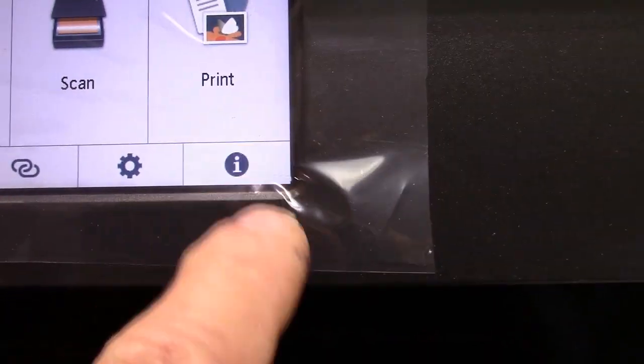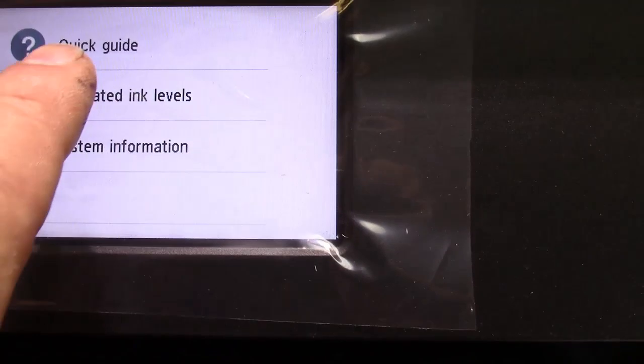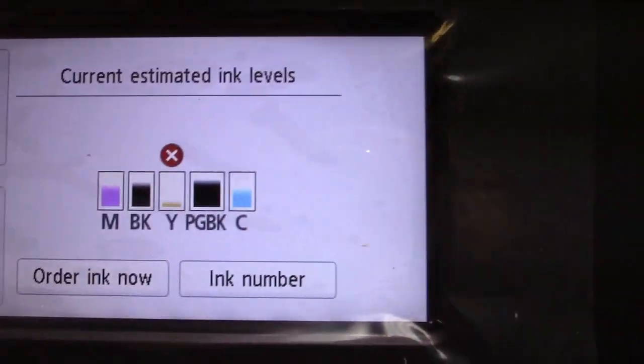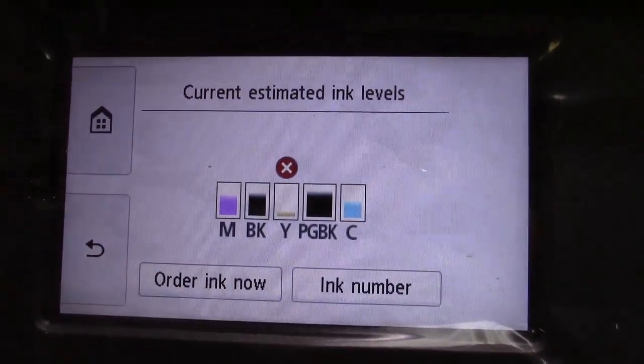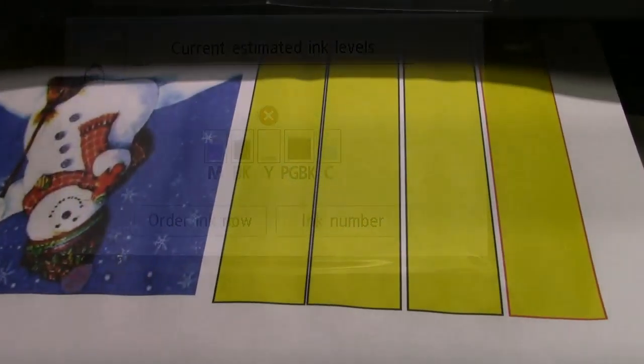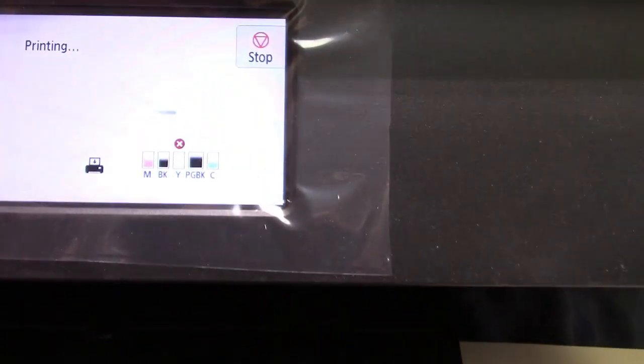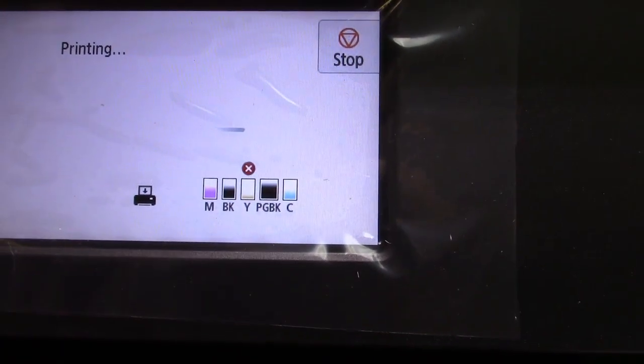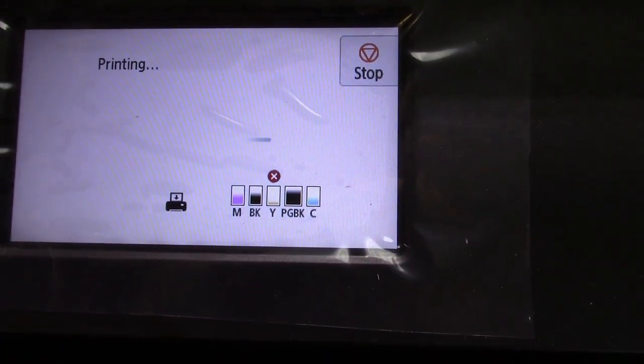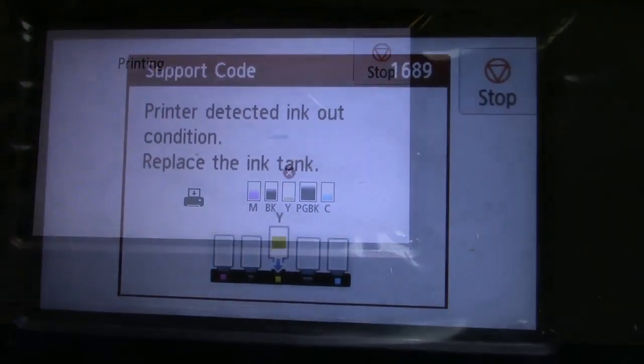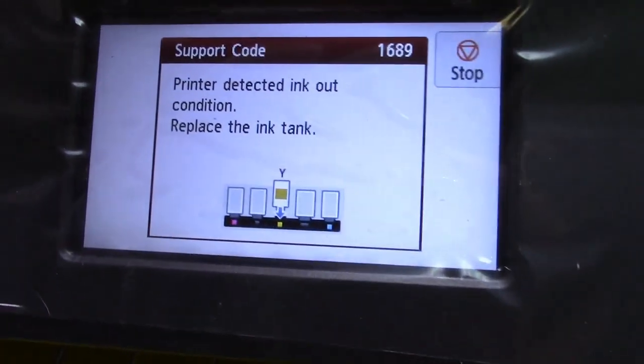Touch the little eye right there for estimated ink levels. Now there's your red X. So I'm going to start to print. Still got the red X. I'm going to wait till it shuts me down from printing.